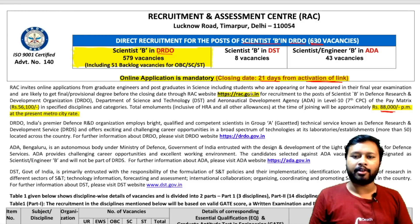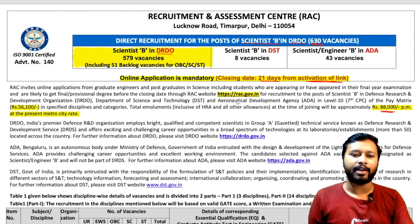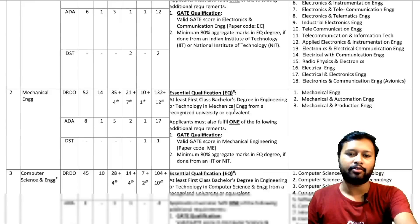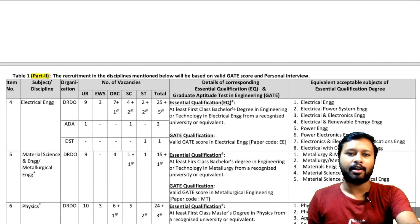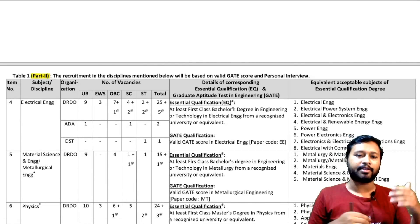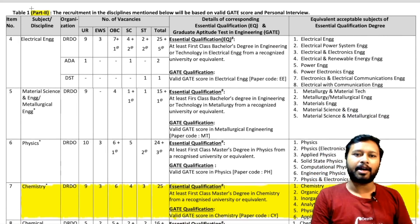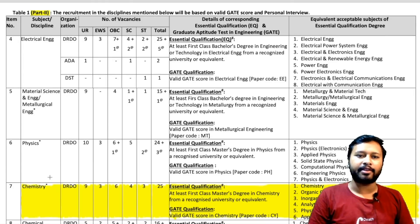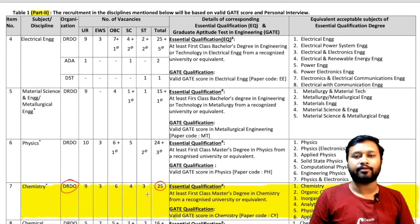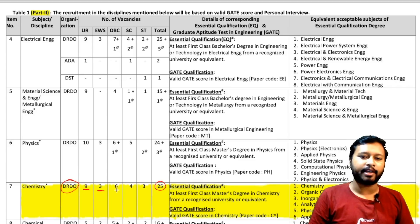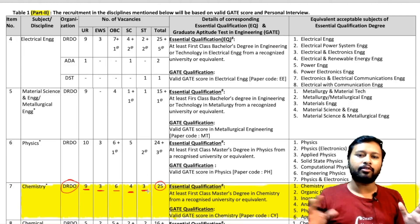Chemistry comes under Part 2 of this advertisement. For chemistry, the exam is organized by DRDO. There are 25 total vacancies: 9 in the unreserved category, 3 in EWS, 6 in OBC, 4 in SC, and 3 in ST category. That is how all 25 seats are divided.